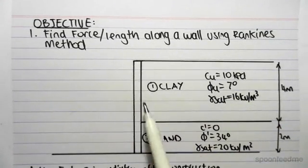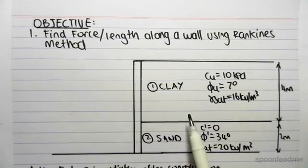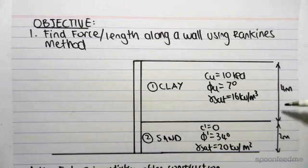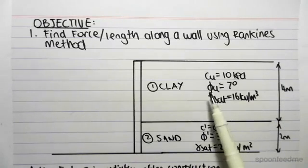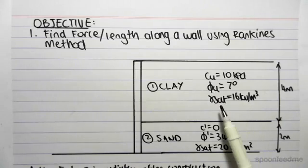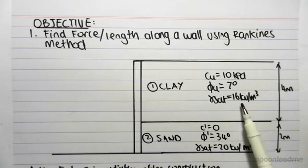So here's our example. We have a retaining wall and we have two layers of soil on one side of our retaining wall. We have clay, which is 4 meters in depth. We have properties Cu equals 10 kPa, PhiU equals 7 degrees, and GammaSat equals 16 kN per meter cubed.